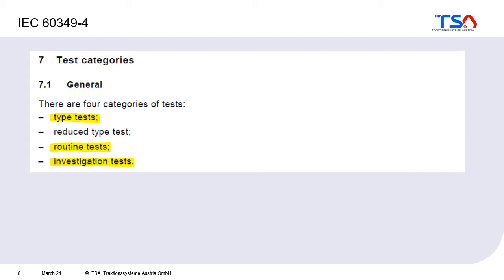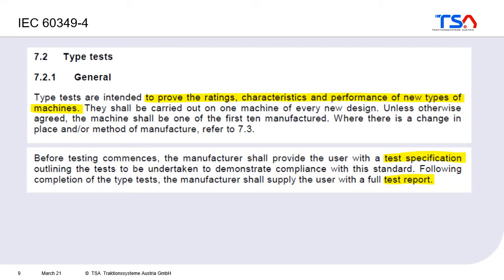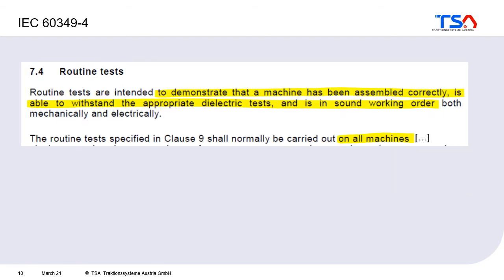Regarding tests, there are two basic types: type tests and routine tests, with optional investigation tests for additional information. The type test is done on one machine of every new design and should prove the ratings, characteristics, and performance of that new machine type. A test specification should be sent to the customer before tests begin, and a full test report is provided afterwards.